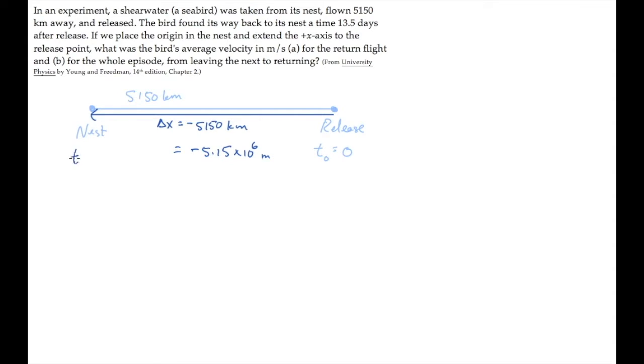It takes the bird 13.5 days to fly home, so that means that the final time, TF, is 13.5 days. Convert that into the SI unit of seconds using the conversion factor 1 day is 86,400 seconds to find that the final time is 1.17 times 10 to the 6 seconds.